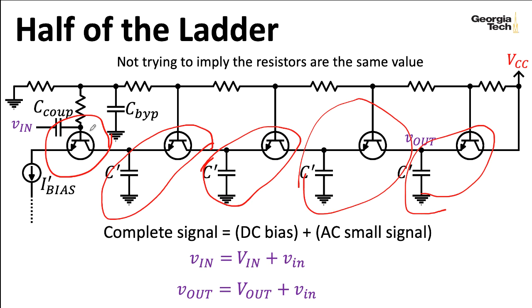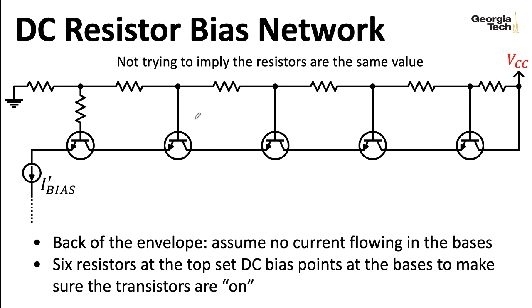In terms of figuring out what the DC bias voltages are at the bases, my recommendation that we've actually used throughout the course is let's just assume that there's no current flowing in the bases. Assume that the current flowing through an emitter and flowing through the collector of a BJT are the same and that the base current is negligible. Now, these are BJTs. By the physics of BJTs, there has to be a current flowing through the base. But when you're designing with them, it's quite often perfectly natural to pretend that that's negligible.